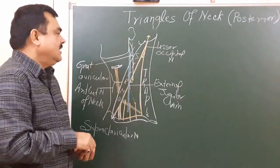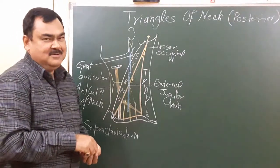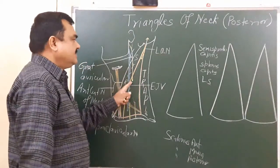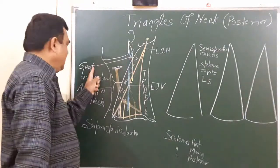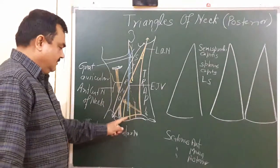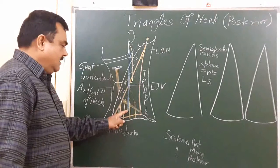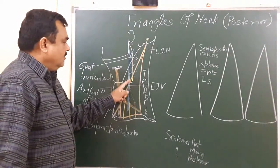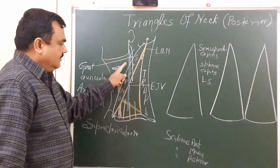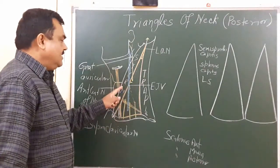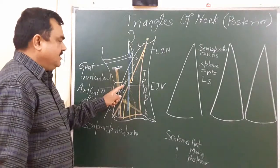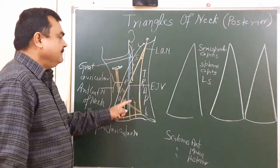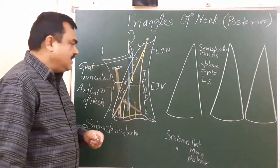So, in the roof of the posterior triangle there are four nerves: lesser occipital nerve, great auricular nerve, anterior cutaneous nerve of the neck, and three branches of the supraclavicular nerve. There is also the external jugular vein. In the roof, the platysma muscle is present, and there is deep fascia — that is the investing layer of the deep cervical fascia. So the layers are: skin, superficial fascia with its contents, and then the investing layer of deep cervical fascia which covers this triangle.